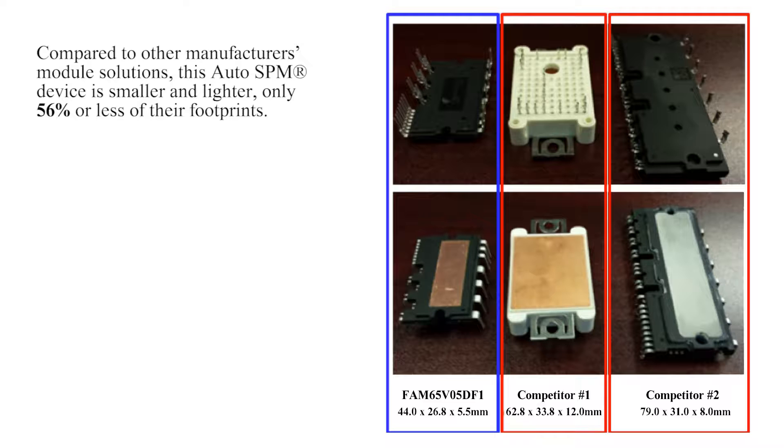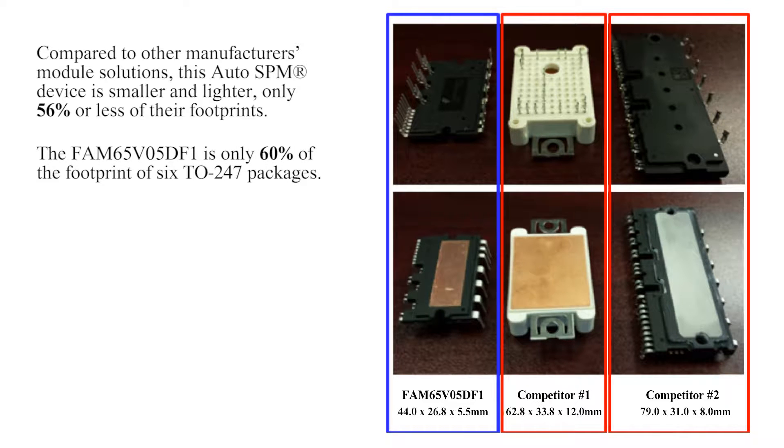Compared to other assemblies using discrete power devices, the FAM65V05DF1 is only 60% of the footprint of six TO247s. Most importantly, this module includes gate drive circuitry, while the other automotive qualified modules do not.